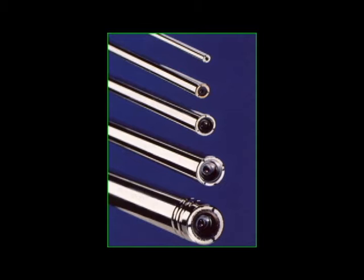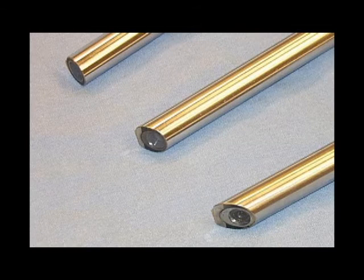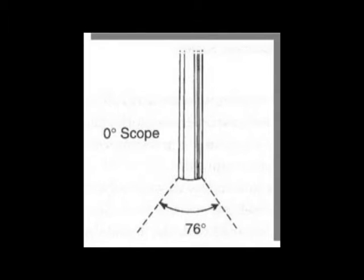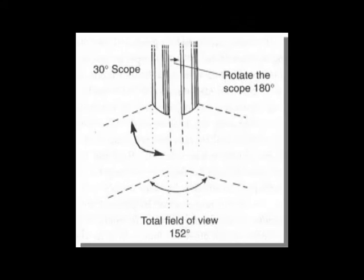Laparoscopically, when we're looking inside the abdomen, the scopes we use are usually either 10 or 5 millimeters in diameter. Looking at the very front of them — as I've shown you in class — they're either zero degree, meaning they look straight ahead, or 30 degree, meaning they have a declination of about 30 degrees downward. That allows us to look around corners to an extent. Generally, we utilize 30 or 45 degree scopes for abdominal procedures, and I try to do most of mine through a 5 millimeter scope, which leaves a much smaller incision.